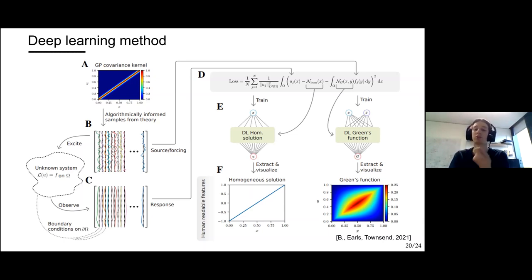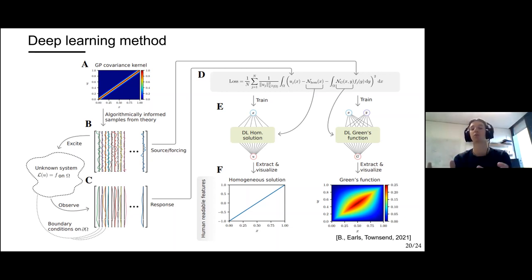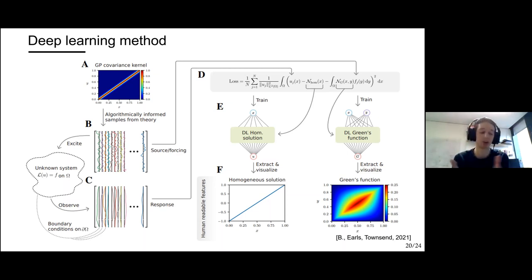The loss function has two important parts: the homogeneous solution, capturing the system response to a zero forcing term and encoding boundary conditions; and the Green's function. After training, we can extract and visualize both. The homogeneous solution neural network satisfies the boundary conditions — for example u(0)=-1 and u(1)=1 — and we recover the Green's function of the Laplace operator. Once trained, computing a new solution simply requires evaluating an integral, giving a fast solver.